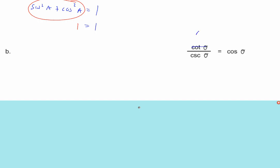Destiny suggests using adjacent over opposite for cotangent, and hypotenuse over opposite for cosecant. You can get rid of the opposites, and that leaves adjacent over hypotenuse. And adjacent over hypotenuse is the cosine!